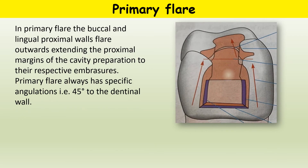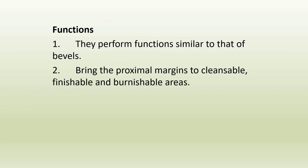Primary flare: the buccal and lingual proximal walls flare outwards into their respective embrasures. The primary flare has a specific angulation of 45 degrees to the dentinal wall, and is similar to that given in the proximal surfaces of class 2 amalgams. Functions: they perform functions similar to those of bevels, bringing the proximal margins to cleansable, finishable, and burnishable areas.